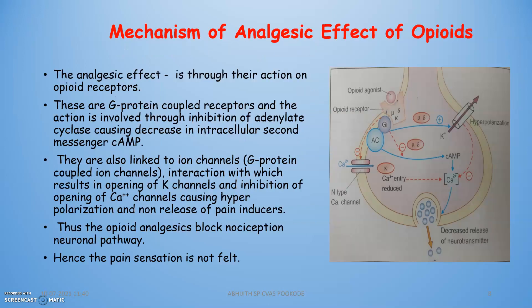The mechanism of the analgesic effect of opioids works through opioid receptors, which are GPCRs. The action involves inhibition of adenylyl cyclase, causing a decrease in intracellular cyclic AMP. They also interact with G protein-coupled ion channels, resulting in opening of K+ channels and inhibition of calcium channel opening, causing hyperpolarization and preventing release of pain mediators at the synapse.